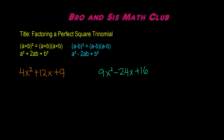Hey guys, welcome back to Bronses Math Club. Today we'll be learning how to factor a perfect square trinomial. Whenever you have a trinomial in the form of a² plus 2ab plus b², or a² minus 2ab plus b², it is going to be a perfect square trinomial.